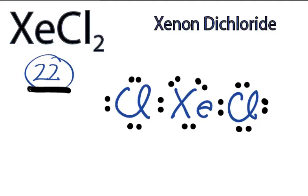So we've used all 22 valence electrons. The chlorines have an octet. They have 8 valence electrons. The xenon has more than 8, but that's okay. It can have an expanded octet.